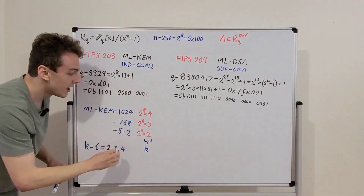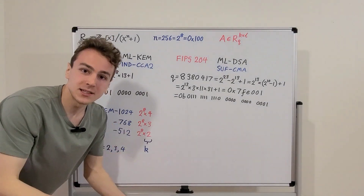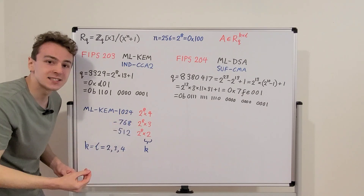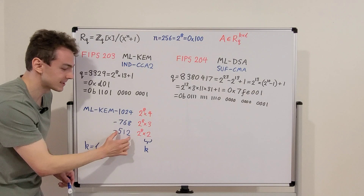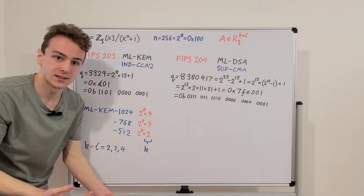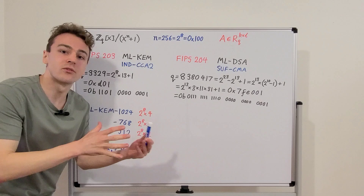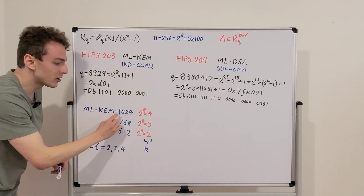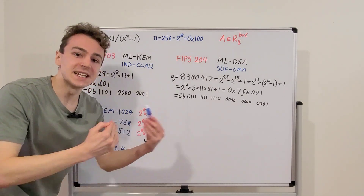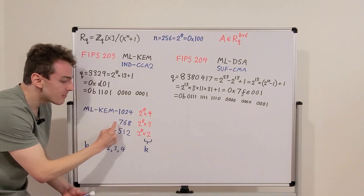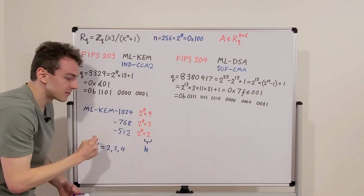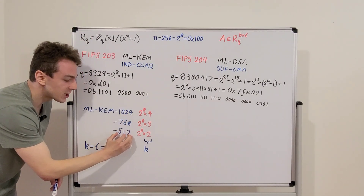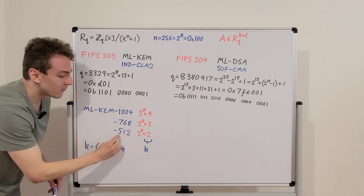It's important to know which parameter set you're using because it determines both performance and security strength. ML-KEM-1024 has the highest security strength but the worst performance — it's a trade-off. If you want the highest security, use ML-KEM-1024. If performance is an issue, switch to ML-KEM-768 for a medium level, or ML-KEM-512 for the best performance and lowest security level.